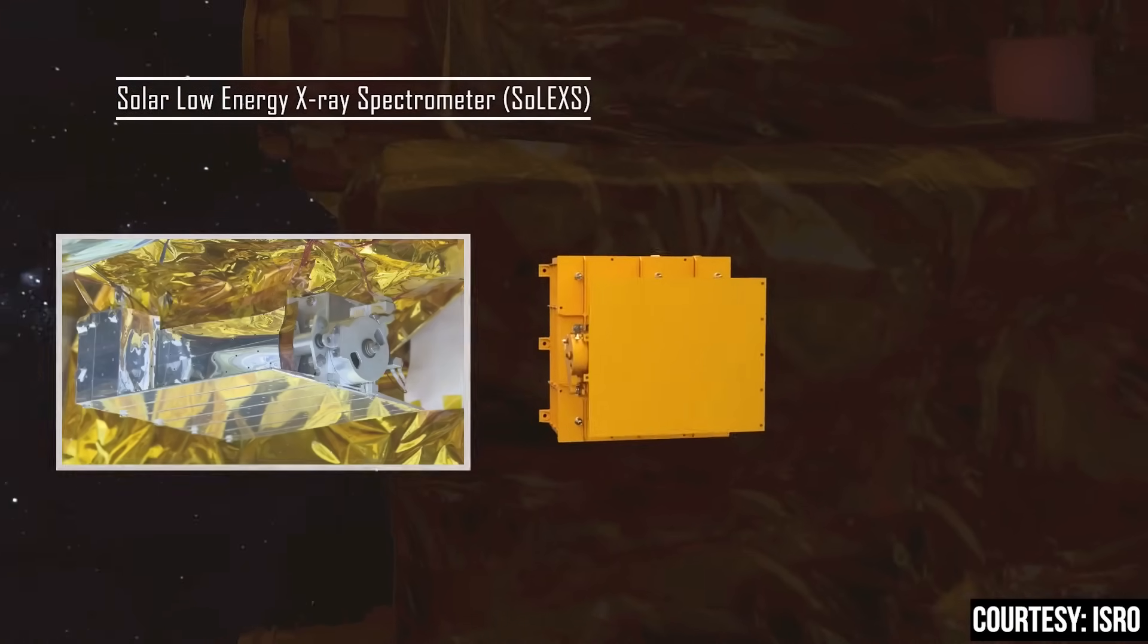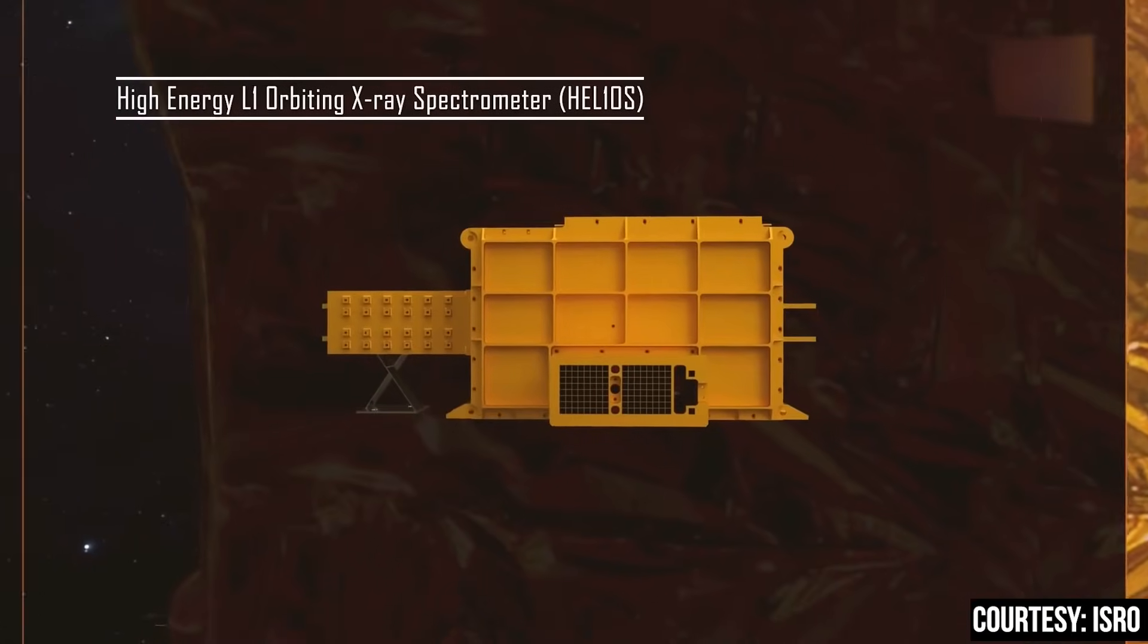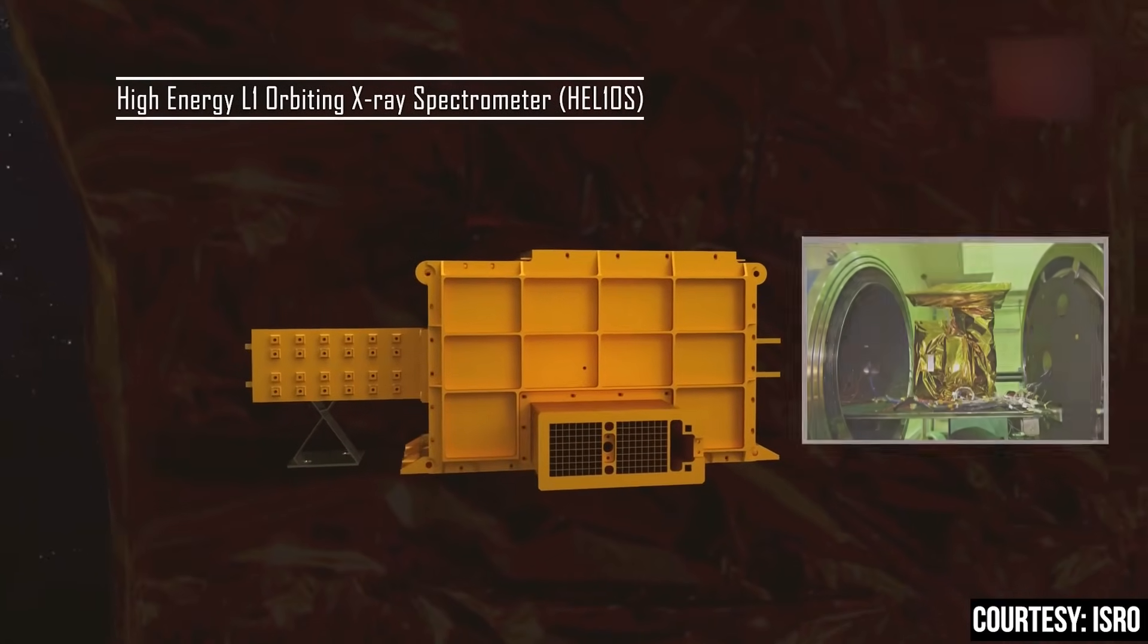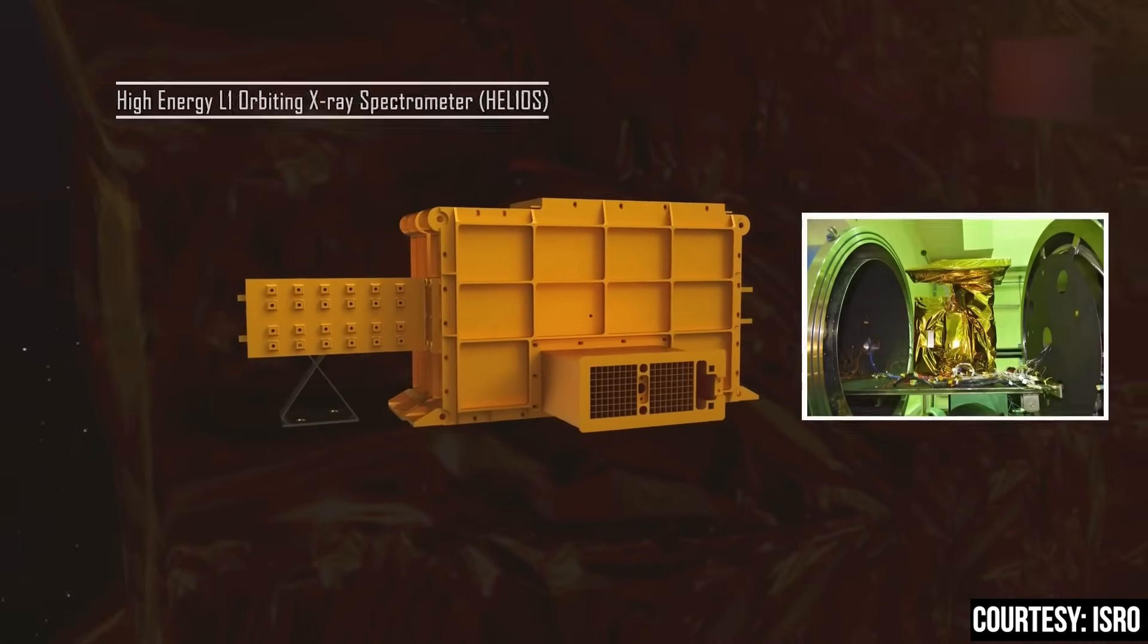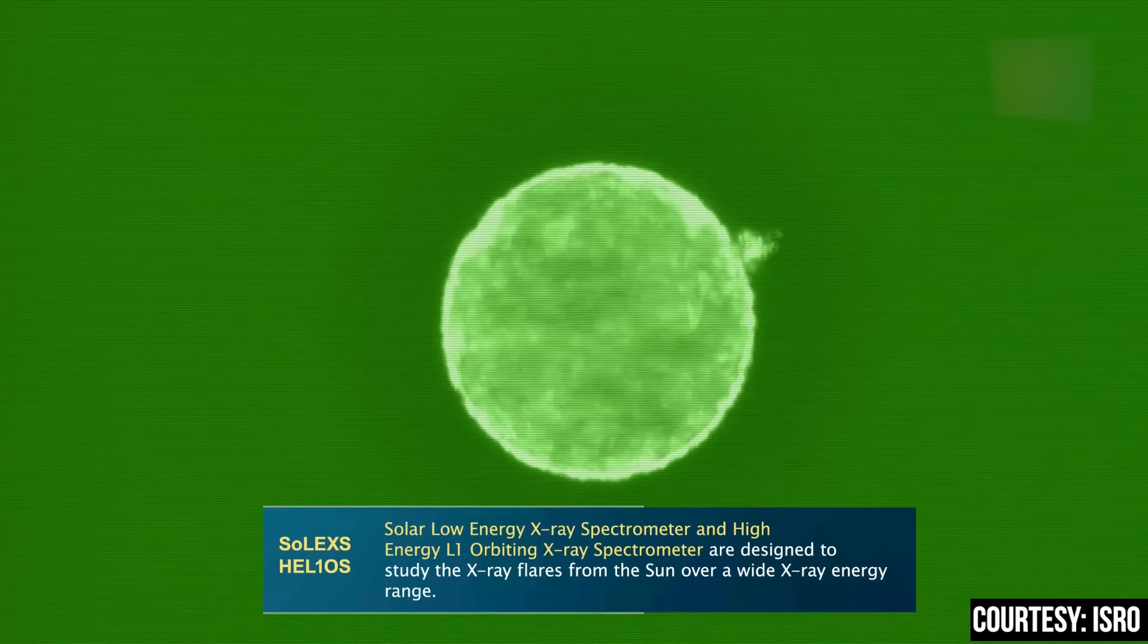The third one is the solar low energy X-ray spectrometer, short form Solexus. Fourth one, the high energy L1 orbiting X-ray spectrometer, short form Helios. These two instruments study the X-rays emitted by the sun.